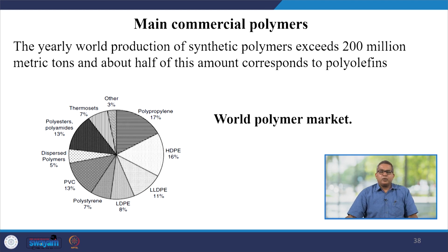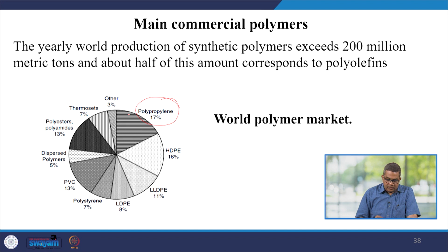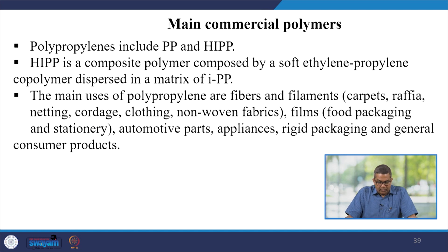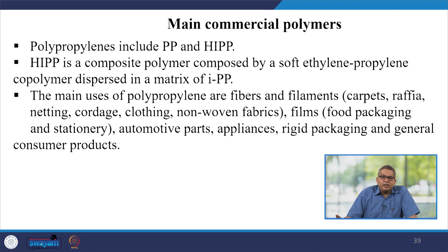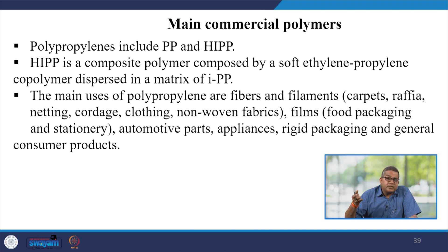Yearly world production of synthetic polymers exceeds almost 200 million metric tons, and about half of this amount corresponds to polyolefins. Polypropylene accounts for 17% of the world polymer market, HDPE 16%, LLDPE 11%, LDPE 8%, with different polymers contributing to the rest. The main commercial polymer is polypropylene; HIPP is a composite polymer where soft ethylene-propylene copolymer is dispersed in a matrix of polypropylene. The main uses of polypropylene are fibres, filaments, carpets, raffia bags, netting, cordage, clothing, non-woven fabrics, food packaging films, automotive parts, appliances, rigid packing, and general consumer products.